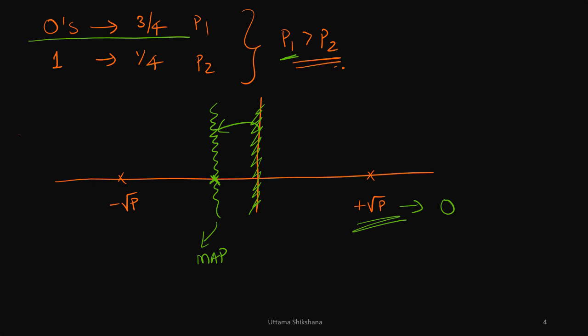The exact decision boundary point requires MAP derivation, which we will cover in upcoming videos. This type of question is asked for research or system engineering roles. Similarly, if 1 had the highest probability, the decision boundary would shift to the other side. This is how intuitively you can decide what the decision boundary should be.